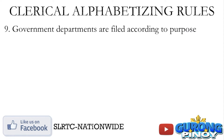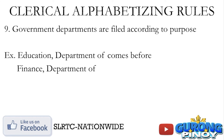Rule number nine: government departments are filed according to their purpose. For example, Department of Education and Department of Finance are filed as 'Education, Department of' and 'Finance, Department of.' Hindi nyo po sila ifa-file na nagsisimula sa letter D — magsisimula po siya sa letter E at sa letter F depende sa purpose ng naturang department.